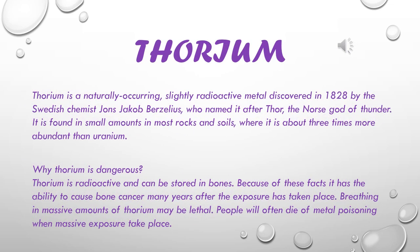Thorium is a naturally occurring, slightly radioactive metal discovered in 1828 by the Swedish chemist John Jacob, who named it after Thor, the Norse god of thunder. It is found in small amounts in most rocks and soils, where it is about three times more abundant than uranium. Thorium can be stored in bones and has the ability to cause bone cancer many years after exposure. Breathing in massive amounts of thorium may be lethal, and people can die of metal poisoning from massive exposure.